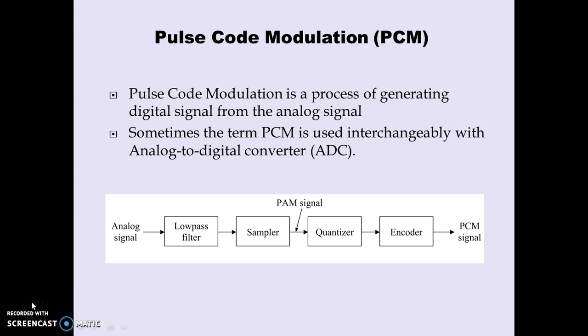Here you can see the block diagram of pulse code modulation. It consists of a sampler — the sampling process studied in the last class — followed by a quantizer, which we will study today. After the quantizer there is an encoder block, which assigns each quantization level a particular code and generates the PCM signal. PCM can sometimes be interchangeably termed as an analog-to-digital converter.